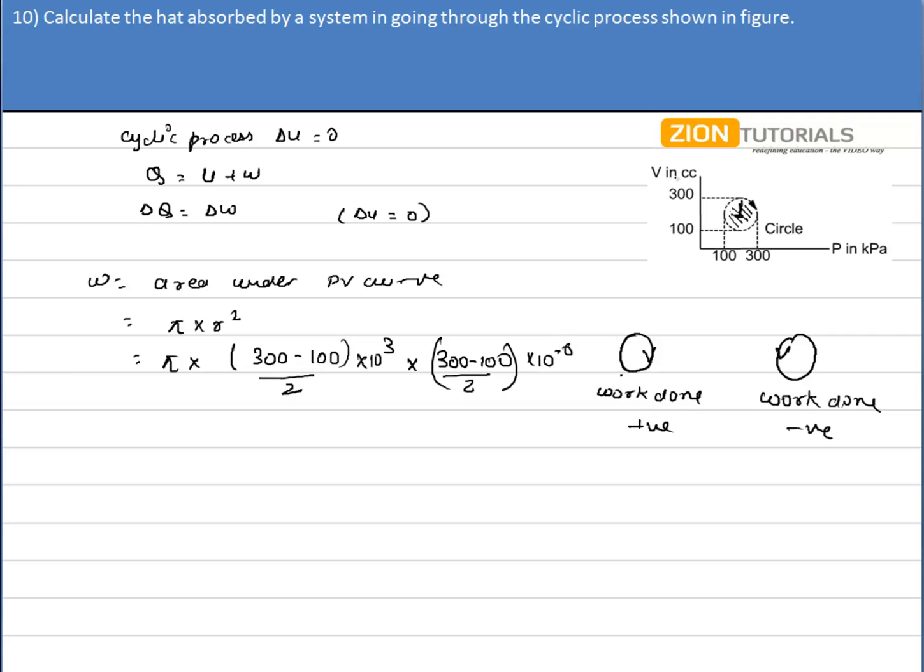Now this pi r square is basically more precisely given by pi ab, where this distance is 2a, this distance is 2b. So I just calculated the value of a and b, substituted over here. This is my a, this is my b.